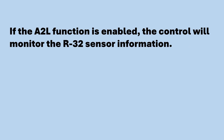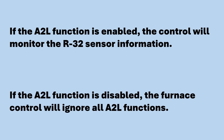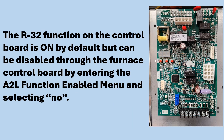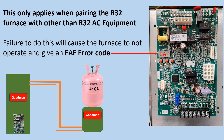If the A2L function is enabled, the control will monitor the R32 sensor information. If the A2L function is disabled, the furnace control will ignore all A2L functions. The R32 function on the control board is on by default, but can be disabled through the furnace control board by entering the A2L function enabled menu and selecting no. This only applies when pairing the R32 furnace with other than R32 AC equipment. Failure to do this will cause the furnace to not operate and give an EAF error code.